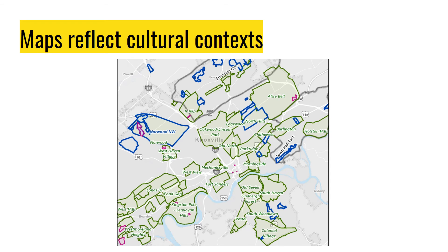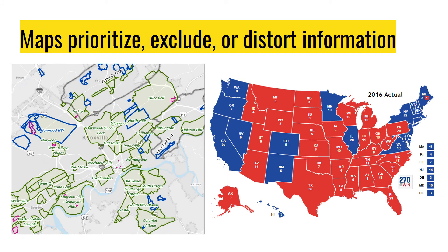Maps can also reflect cultural contexts. Here is one from a colleague showing different parts of Knoxville — different neighborhoods — each representing a different cultural context, kind of like we have in Jacksonville with the beaches area, the south side, the Arlington area, the west side, the riverside area, etc. Maps can prioritize some information, exclude information, and distort information. But if we recognize that and look at numerous maps, we can try to get a better idea of what the truth is.